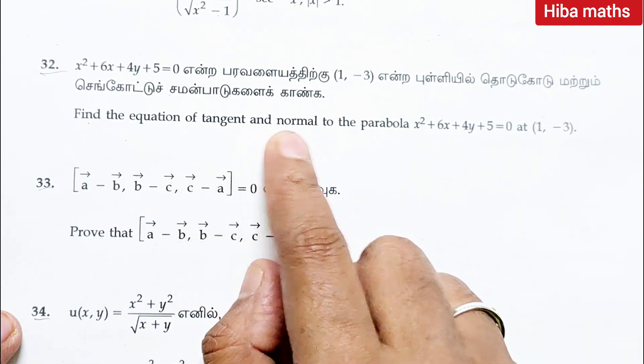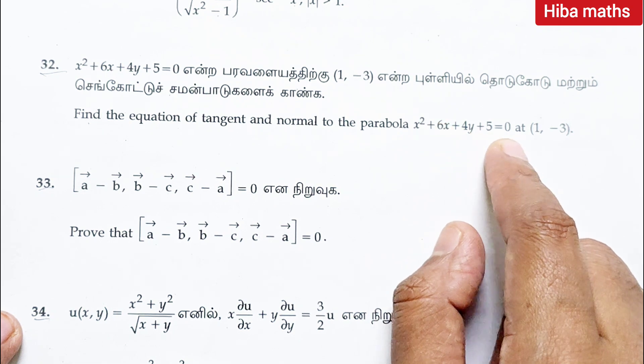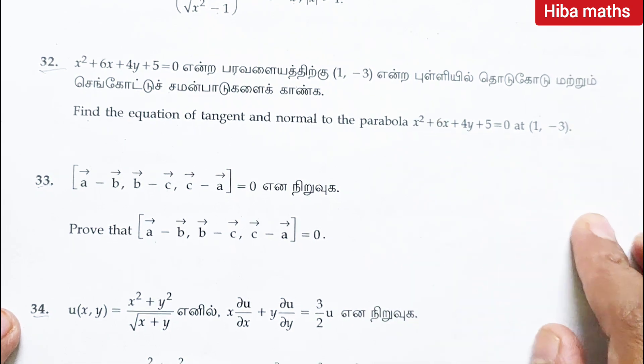Question 32: find the equation of tangent normal to the parabola x square plus 6x plus 4y plus 5 equal to 0 at 1 comma minus 3.